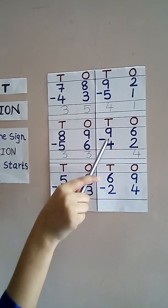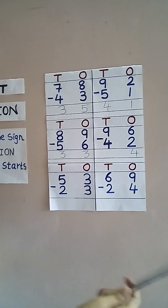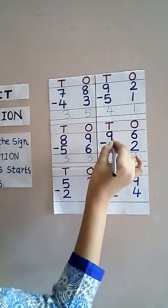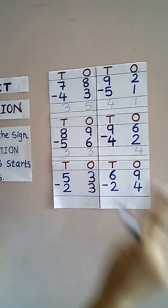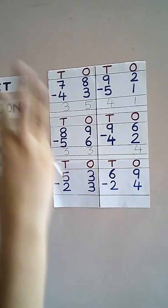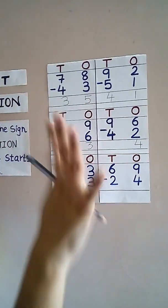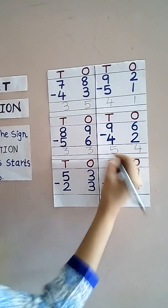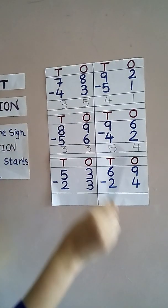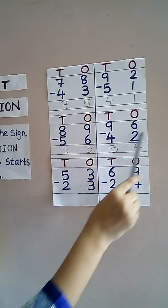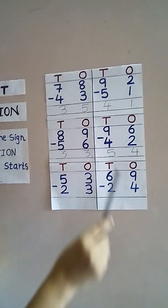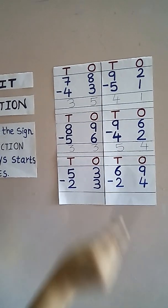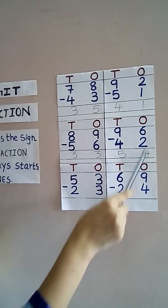Now here in the tens place, what is this? 4. Count from the next number — that is 5 — and count up till 9: 5, 6, 7, 8, and 9 — how much did we get? 5. Write down 5. So when we subtract 96 from 42 we get 54 — that is 5 tens and 4 ones.